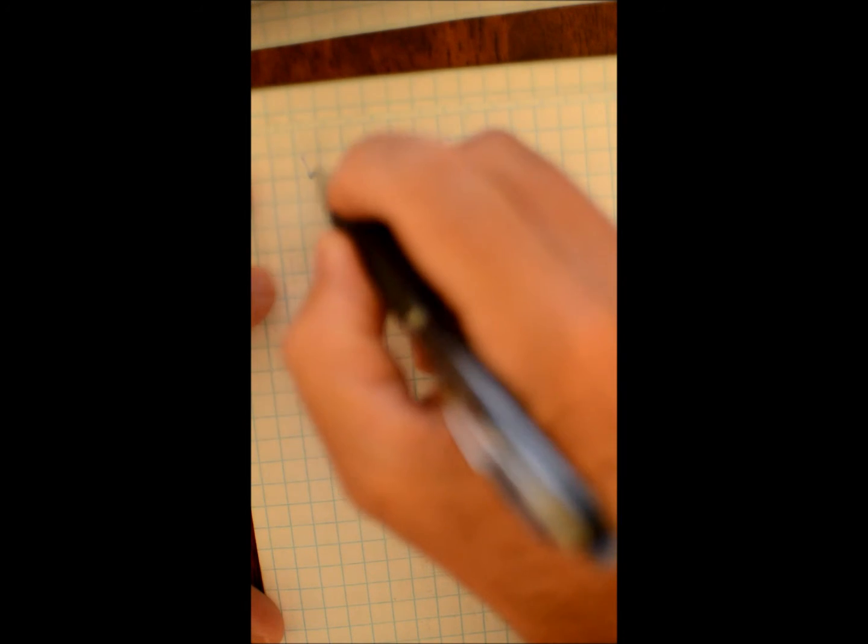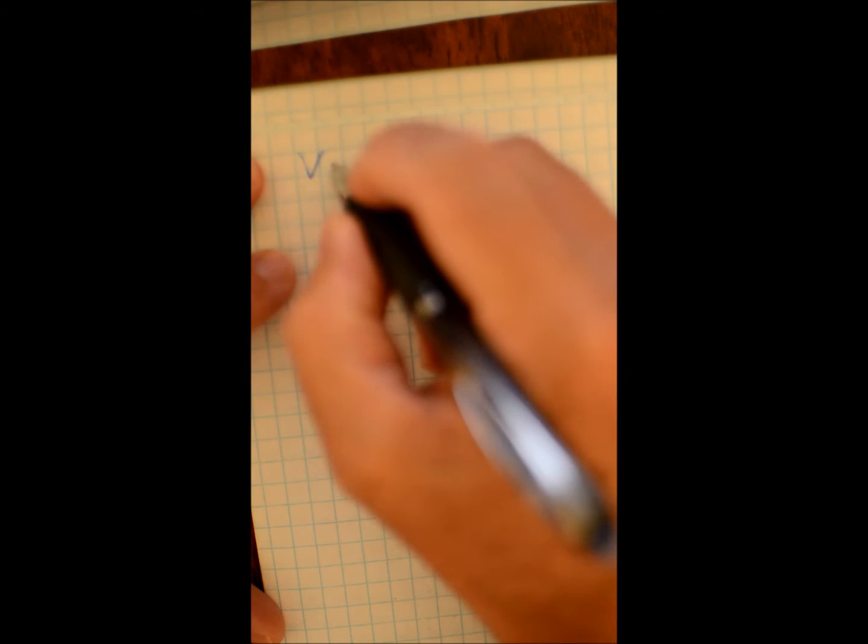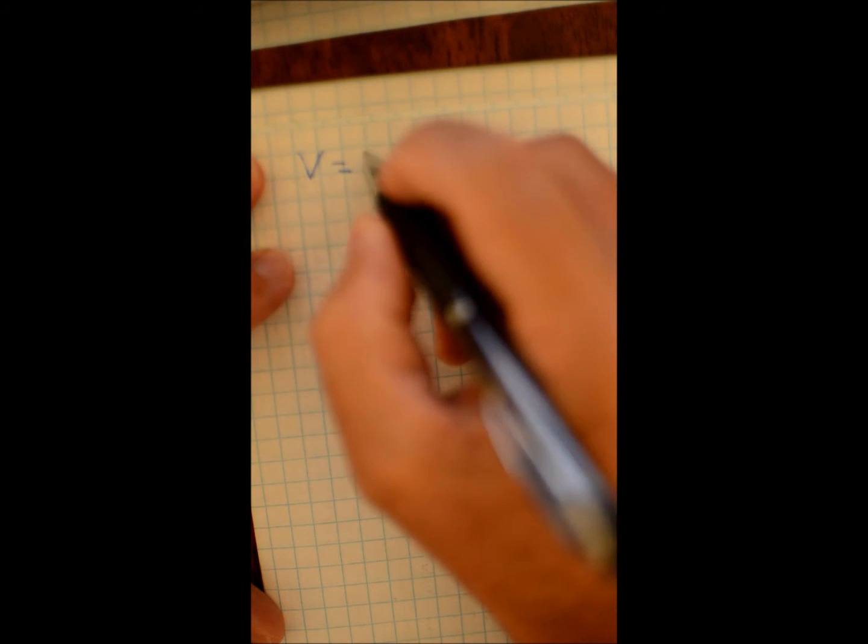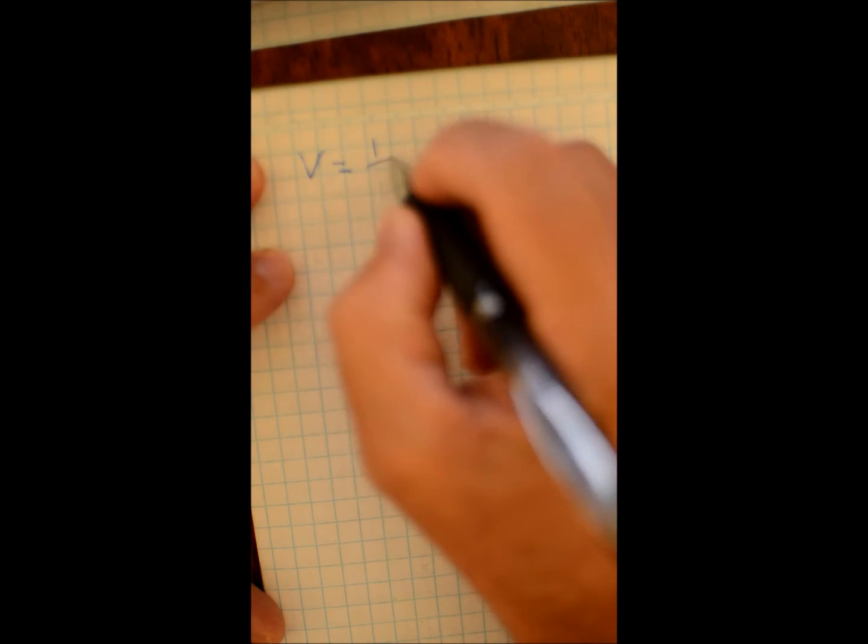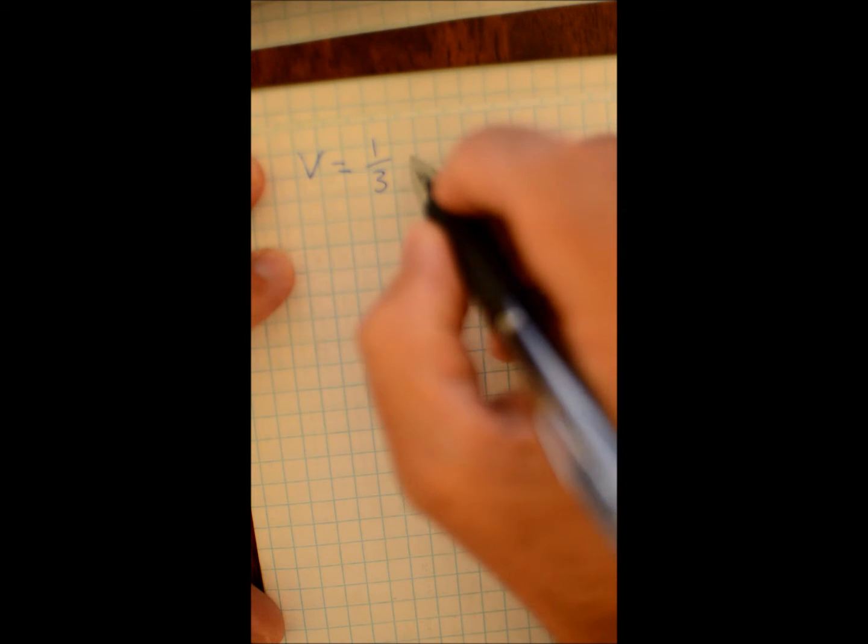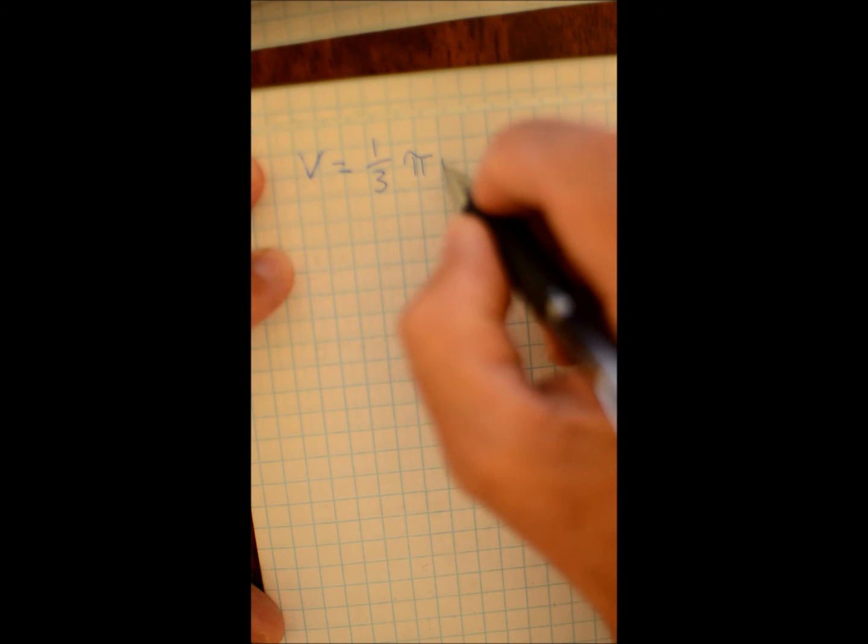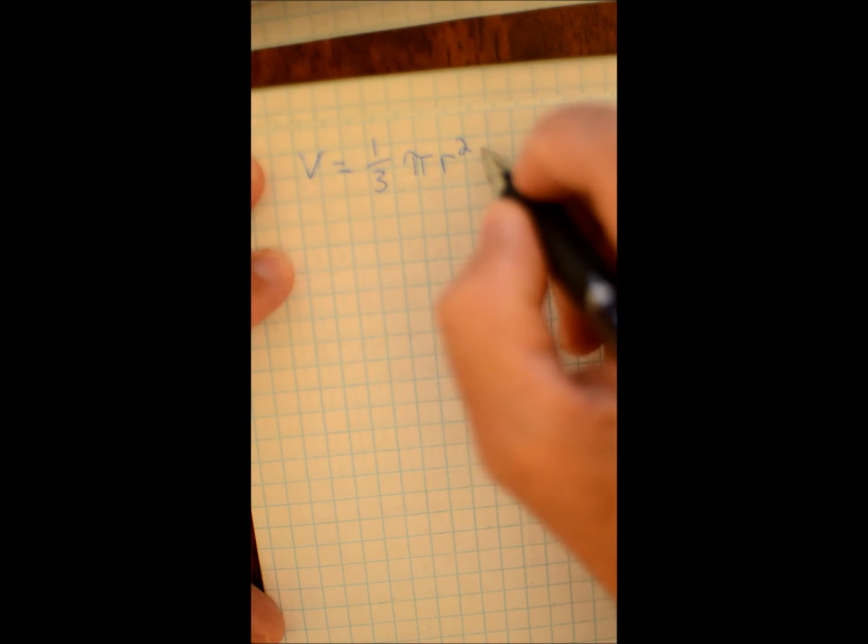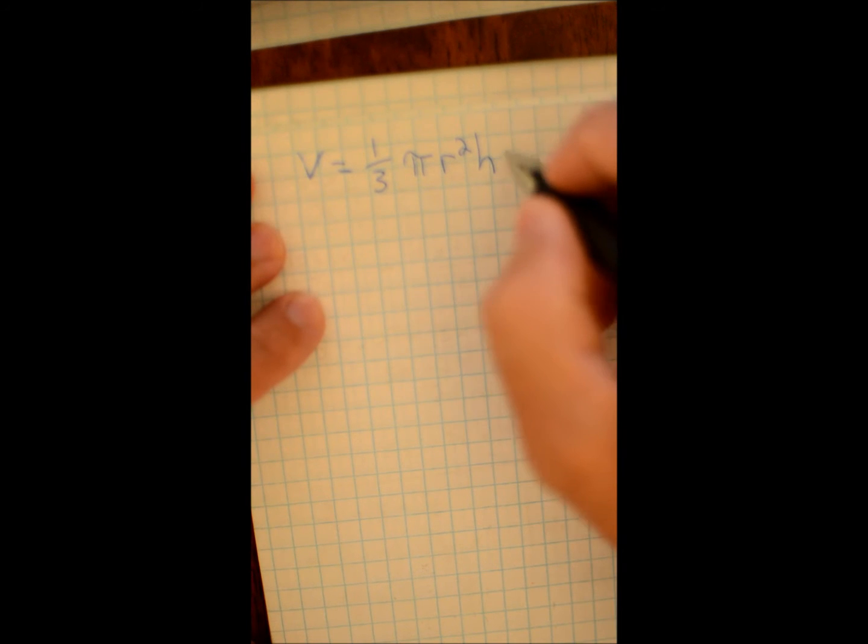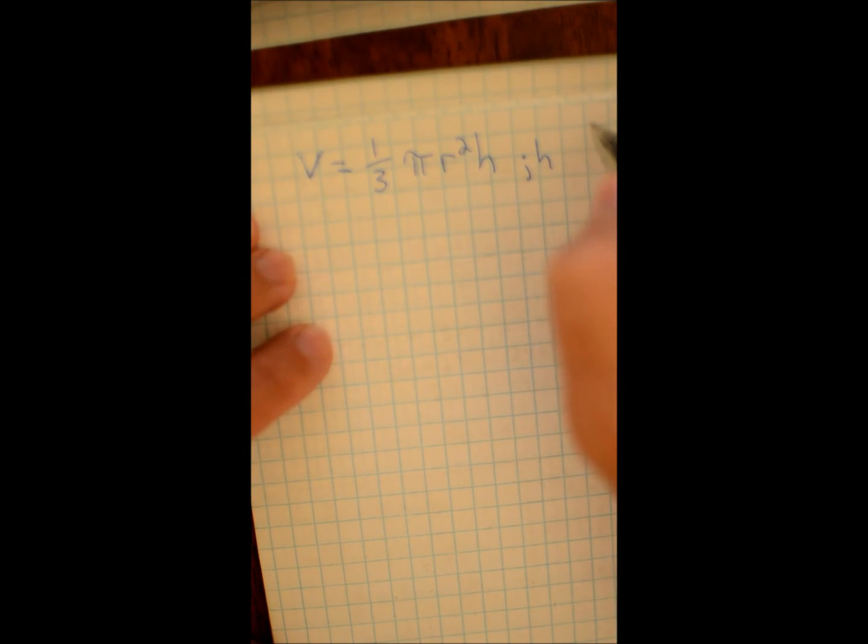Problem: v is equal to one-third pi r squared times h with respect to h. We're solving for h.